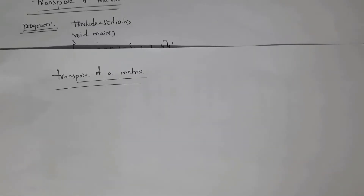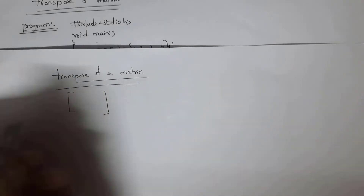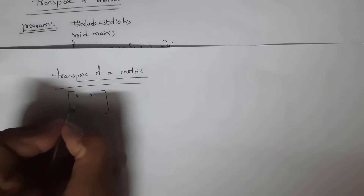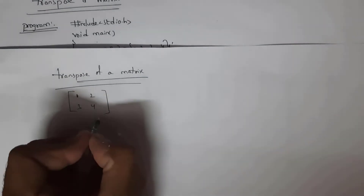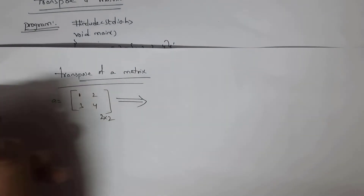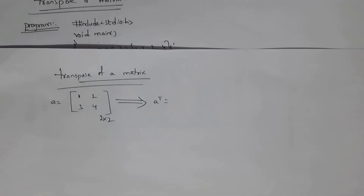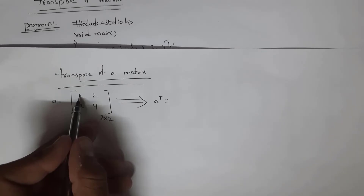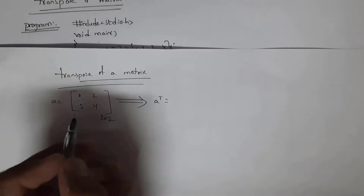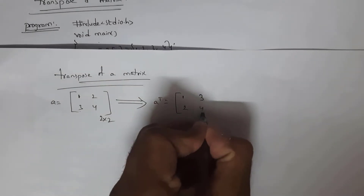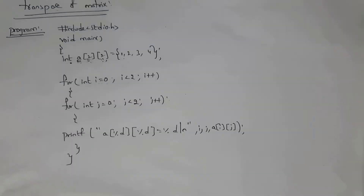Next I will explain the program for transpose of a matrix. Before that you need to know what transpose of a matrix is. For example, this is a 2x2 matrix with elements one, two, three, four — two rows and two columns. To find the transpose, we represent columns as rows. The first column contains one and three, so the first row of the transpose is one, three. The second column gives the second row: two, four.